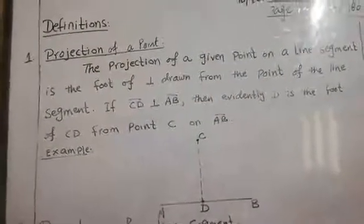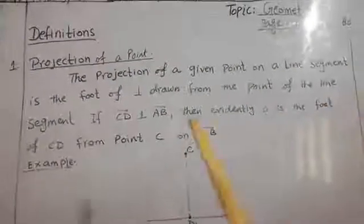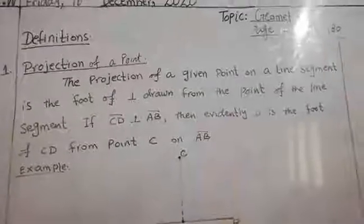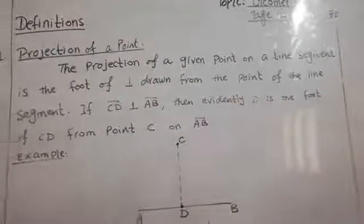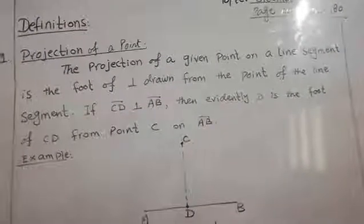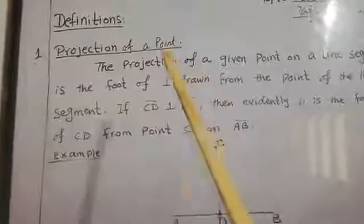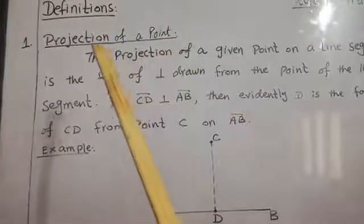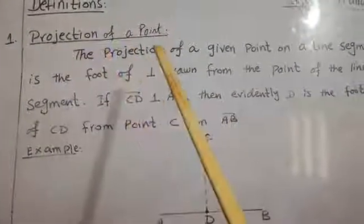There are two definitions in chapter number 8. First of all we will discuss these two definitions and then we will move to chapter number 9, page number 180. In chapter number 8, the two definitions are: first one is the projection of a point.